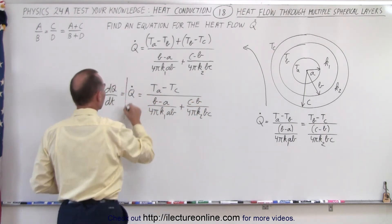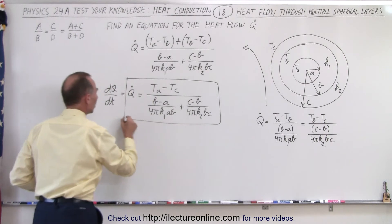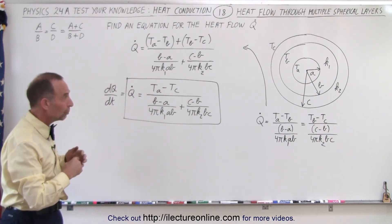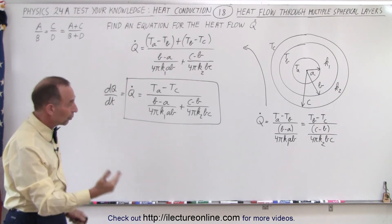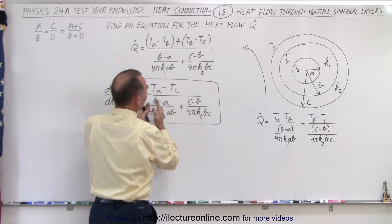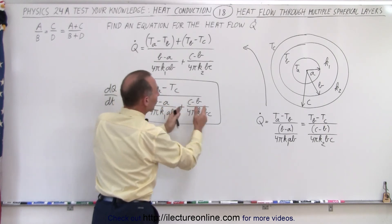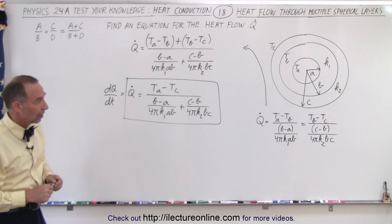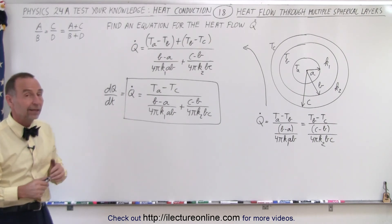And this then becomes the equation that we need for a multi-layer spherical shell, or a shell with multiple layers. And of course, if there's a third layer and a fourth layer, it will be the total difference in the numerator of the temperatures. And the denominator will be the heat resistances of each of the layers. And you can add as many layers as you like. And that is how it's done.